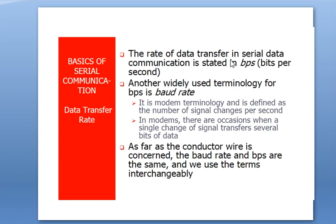The data transfer rate in serial communication is measured in BPS — bits per second — also called baud rate. This measures how many bits are transmitted from sender to receiver, or from a controller to a PC. In modern terminology, baud rate is defined as number of signal changes per second. For conductor wire, baud rate and BPS are the same and the terms are used interchangeably.